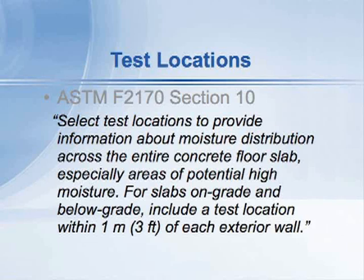So if you had a building with a square floor shape, you're going to put one test roughly three feet or so from each exterior wall and spread the rest of them around generally throughout the floor.